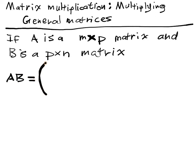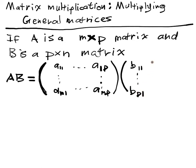So first we expand out into A11 all the way up to A1p and now this is going to have p columns all the way down to Am1 Amp, and we multiply by this matrix B11 all the way down to Bp1, and we have n columns now, Bpn down here.